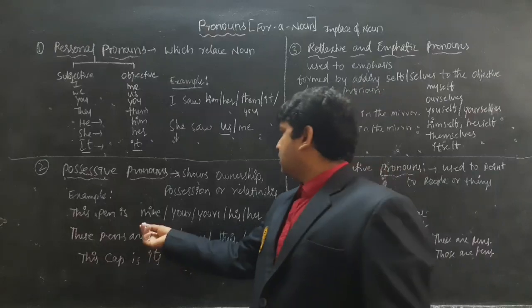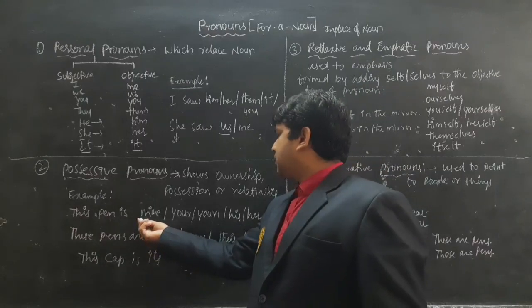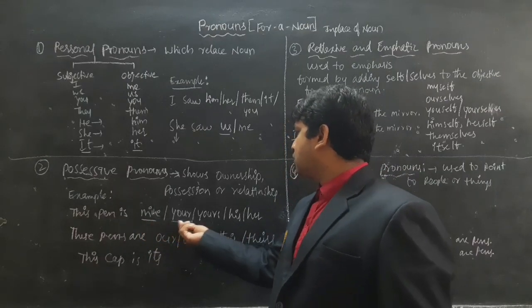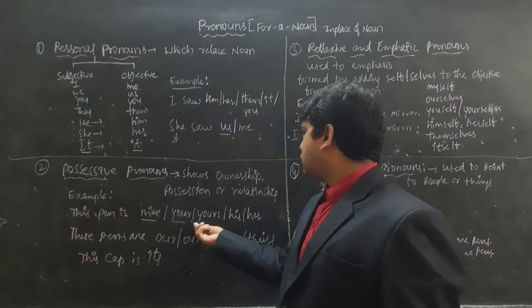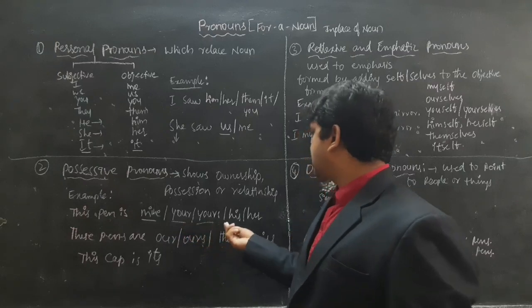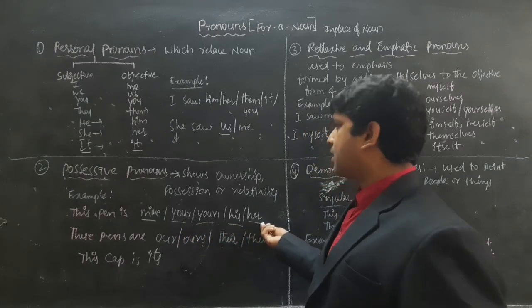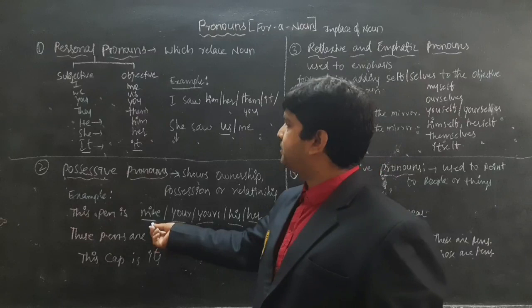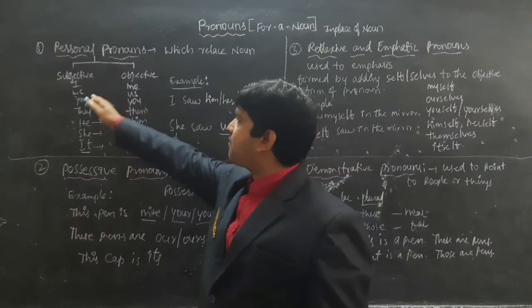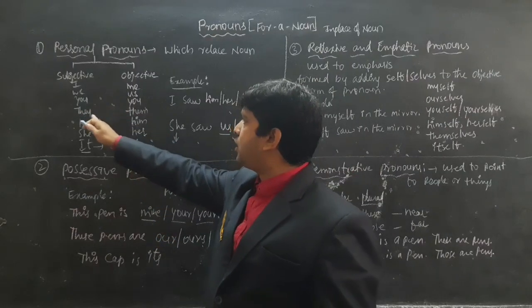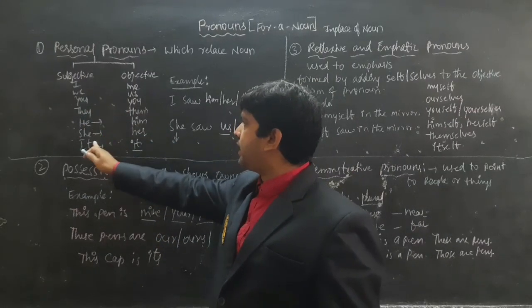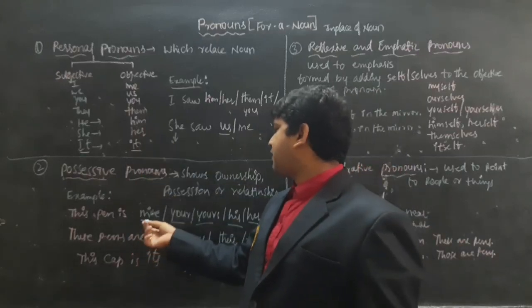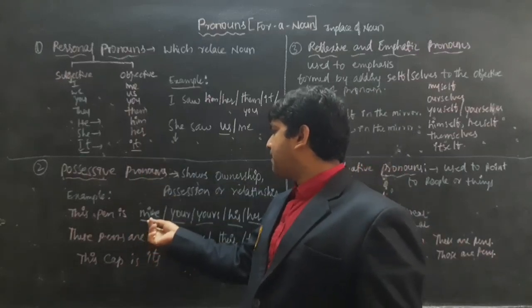In Possessive Pronouns we use: mine, your, yours, his. These are the possessive forms for I, we, you, they, he, she, it. For 'I' we use 'mine.'